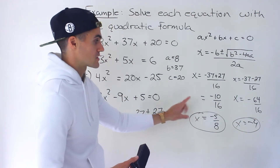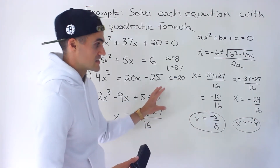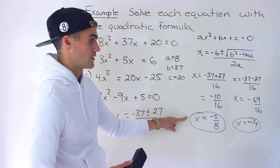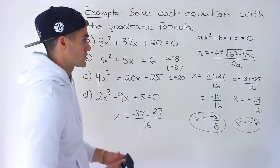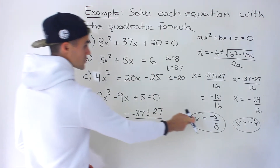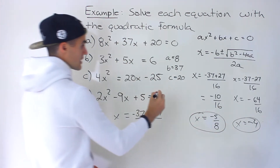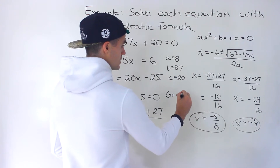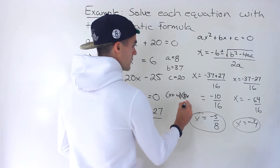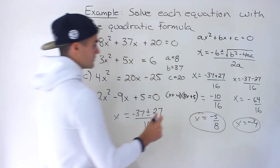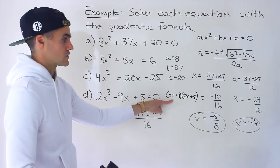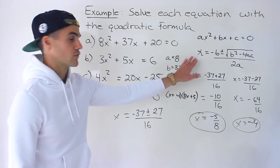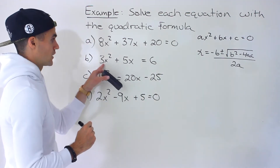This one is a decimal, but what I mean is it doesn't contain a radical within the solution — they're actual smooth values. Whenever there are smooth values like this, it means that the equation actually factors. If you factored it, I think it would factor into (x + 4)(8x + 5). So this quadratic would factor into those, and that's where you would get those solutions. But we're not solving by factoring here — we're solving with the quadratic formula. Moving on to part B.